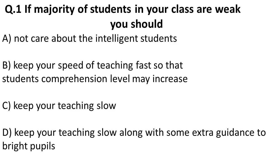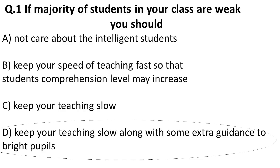Question one: If a majority of students in your class are weak, you should — options are: A) not care about intelligent students, B) keep your speed of teaching fast so that students' comprehension level may increase, C) keep your teaching slow along with some extra guidance to the bright pupils. The correct answer is C: keep your teaching slow along with some extra guidance to the bright pupils.